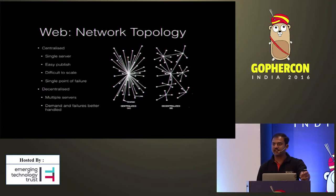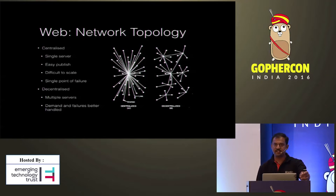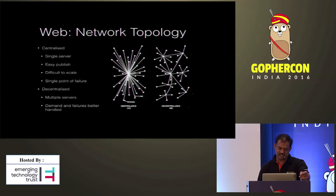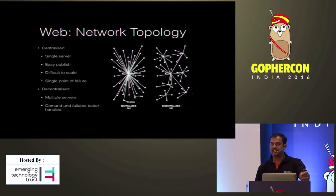We realized this early and started moving to a decentralized setup, where there are multiple servers within the network and clients connect to a server based on locality and availability of content. Decentralized setup handles demand and failures better than centralized. More demand can be handled by adding more servers, and failure in a single server is not going to affect the entire network.